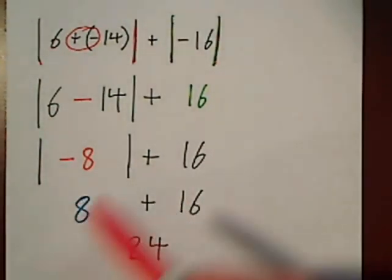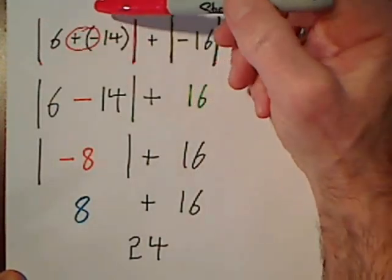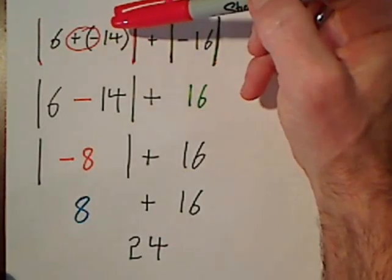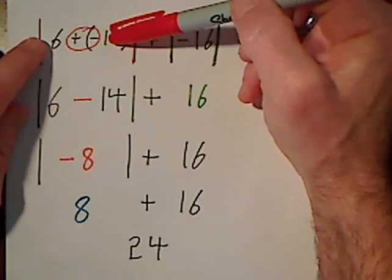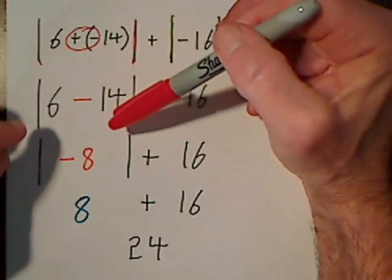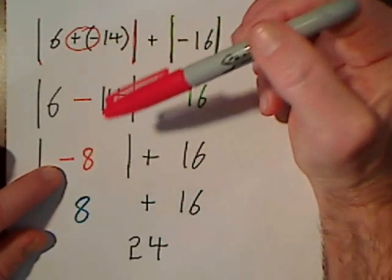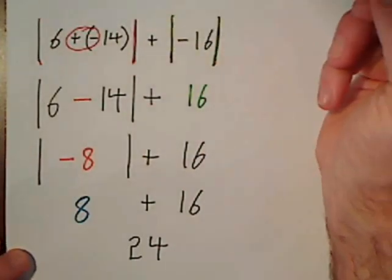Back up here, if you don't like to clean this up, if you just want to read this as 6 plus negative 14, you would still say you have a positive 6 and a negative 14. The signs are different. You would subtract and keep the sign of the larger. That would take you to this step. I really like you to be in the habit of cleaning this up, but the choice is yours there.